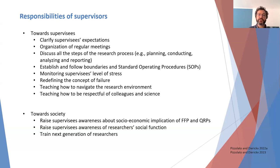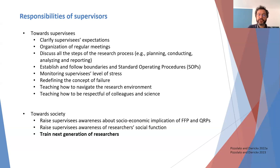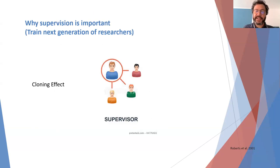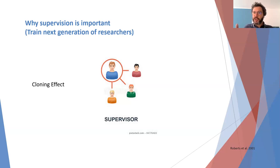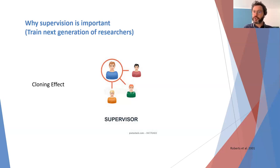Supervisors also have responsibilities towards society. They are responsible for raising supervisees' awareness about the socio-economic implications of falsification, fabrication, plagiarism, and questionable research practices, and for raising awareness of the researcher's social function. Above all, they are responsible for training the next generation of researchers. Empirical studies show a cloning effect: good, responsible supervisors and good role models will produce good researchers and good future supervisors.